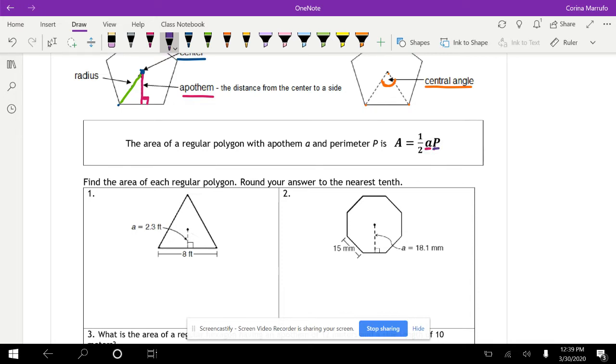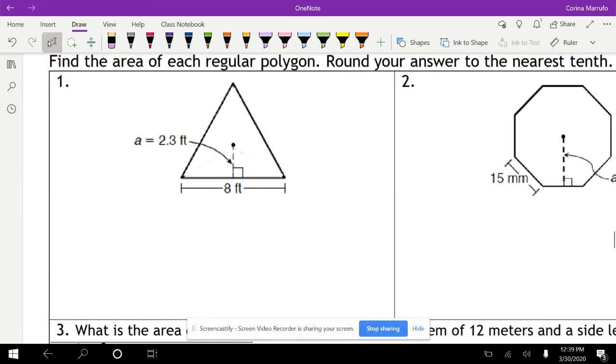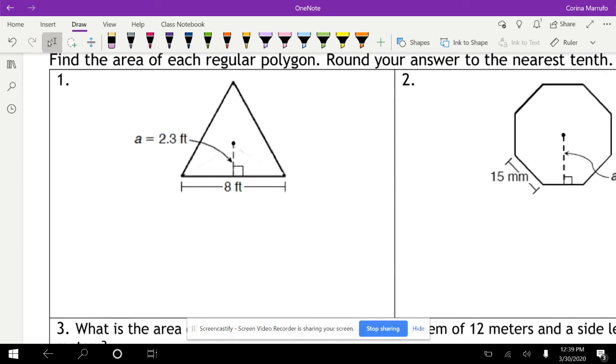Let's go ahead and look at the first example. We're finding the area of this regular polygon. In this case, our regular polygon is a triangle. So I'm going to write down the formula. Area equals one half times little a times P. And so little a is our apothem. In this case, it is 2.3. So instead of little a, I'm going to put 2.3.